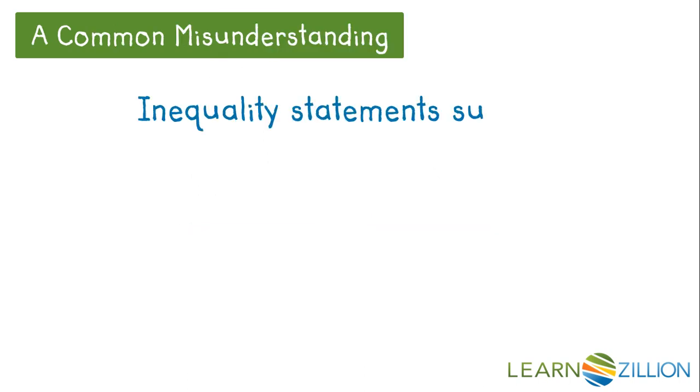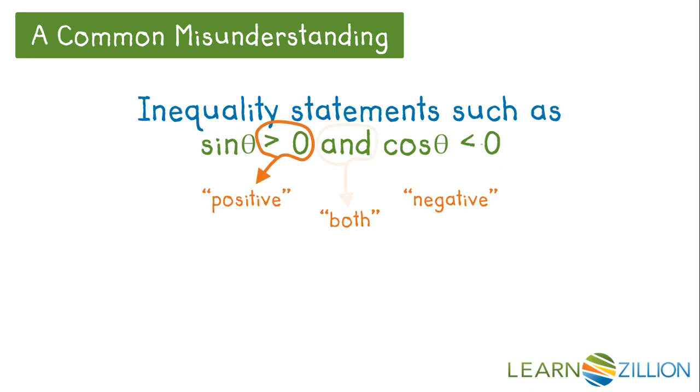Some students don't understand the meaning of statements like, the sine of theta is greater than zero and the cosine of theta is less than zero. They need to understand that greater than zero means positive, less than zero means negative, and and means both have to be true.